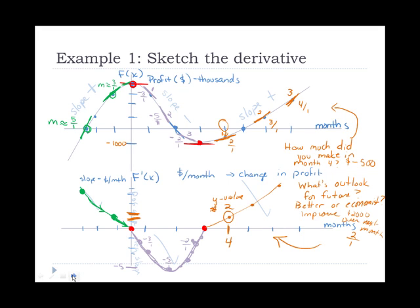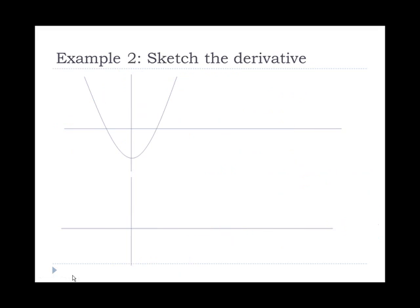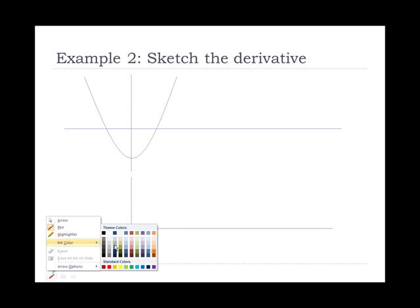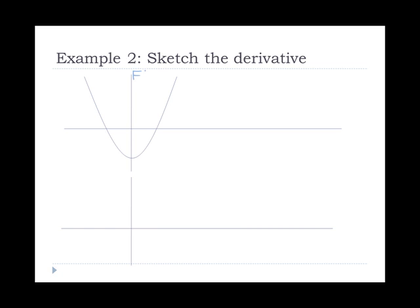Now we're going to go backwards. So now what we have is the derivative graph — this tells us the slope. The y-axis points here are the slope values. A positive slope means profit is growing; down here is a negative slope. This tells us how fast our profit is growing.